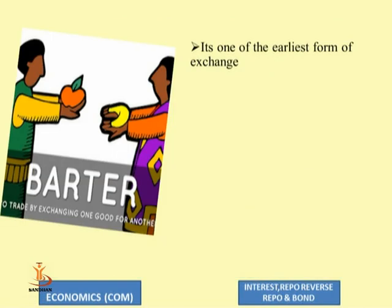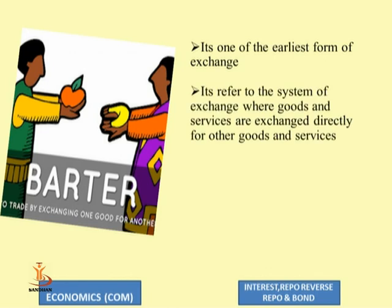The story started with the barter system. In our school days we would exchange our books for stickers, or our pens for pencils, because we want something in exchange for other things. So from those days, when money was not invented, there was a barter system. In the absence of money, people exchanged goods directly. This system is called the barter system and it is one of the earliest forms of exchange — where goods and services are exchanged directly for other goods and services.